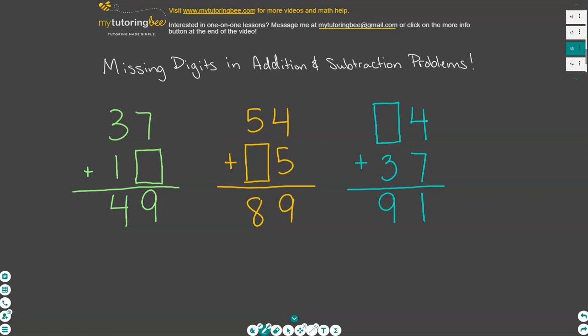As you can see here, I have three different addition problems. Each one is missing a digit somewhere in the problem, but we do have the sum of all of these problems, and it's our job to figure out what these missing digits are. So let's go through some strategies and things to think about when you're solving these types of problems.